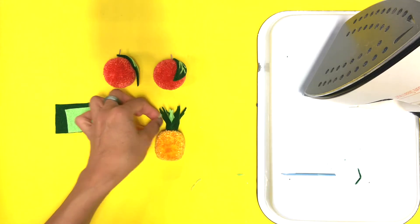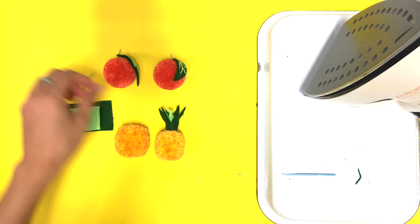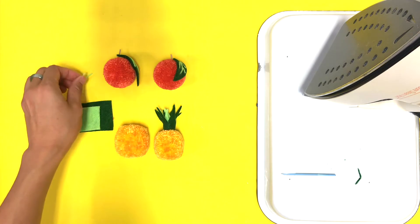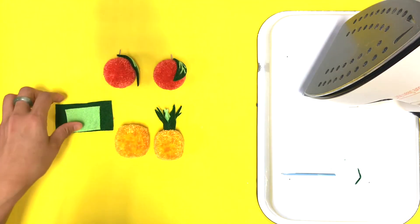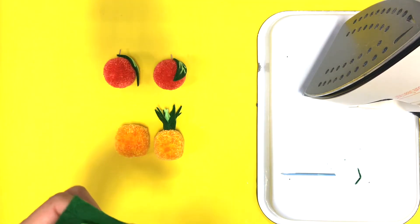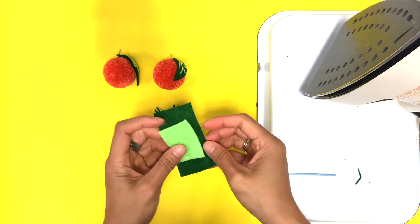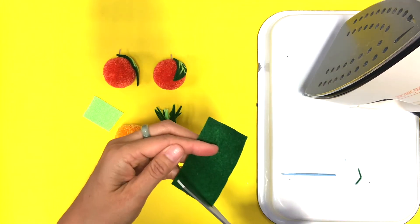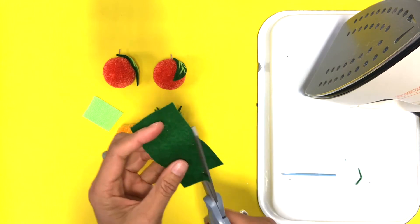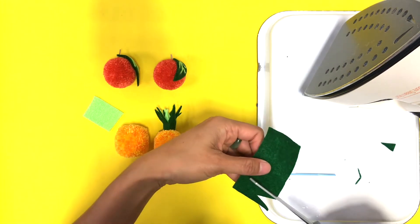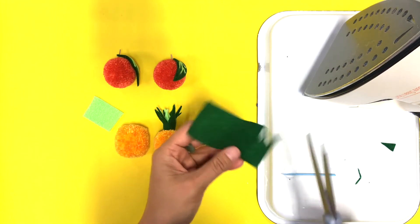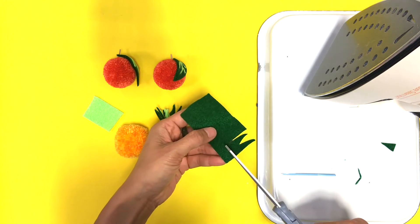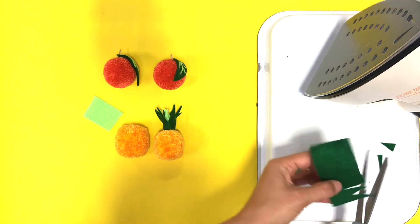For the pineapple, what you'll do is you'll take your big green piece and you're just going to randomly cut little zigzags - could be different lengths. Make sure you just leave about a half inch base on the bottom.